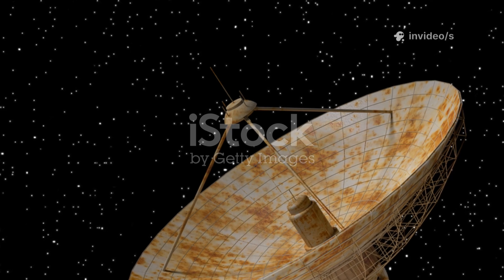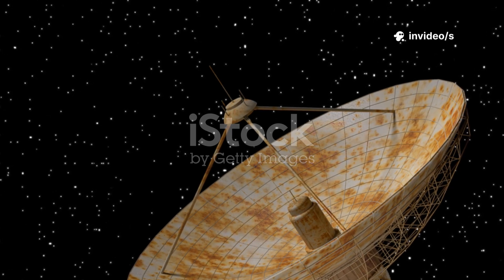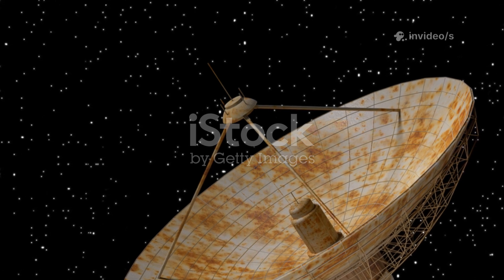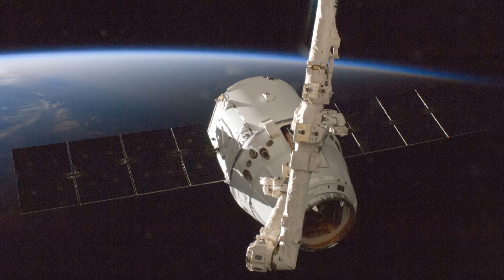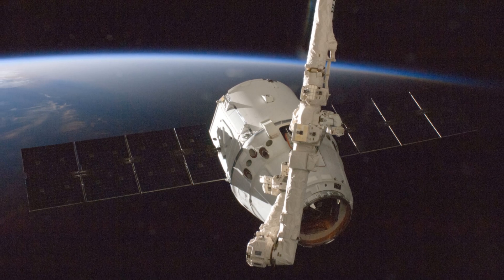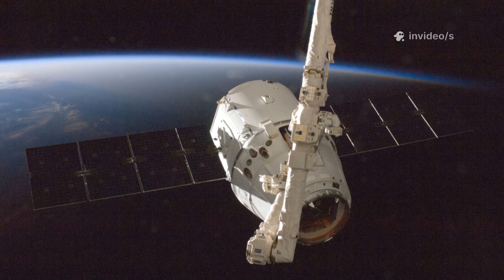Voyager 2's faint signal captured by the deep space network traveled billions of miles with less power than a wristwatch battery. For years, the universe seemed calm. Routine data, steady readings, a tranquil cosmic ocean.